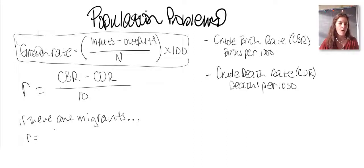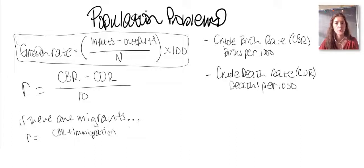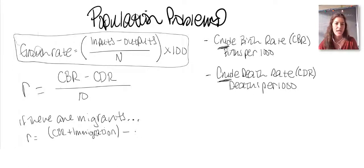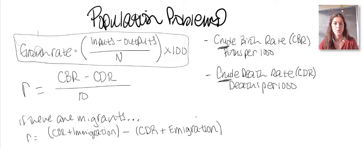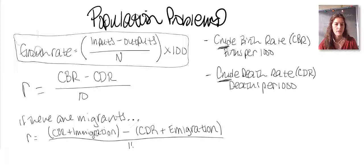When including migration, your inputs are crude birth rate plus immigration rate (immigrants per 1,000 individuals), and your outputs are crude death rate plus emigration rate (emigrants per 1,000 individuals). Then divide the total inputs minus total outputs by 10 to get your percent growth rate.